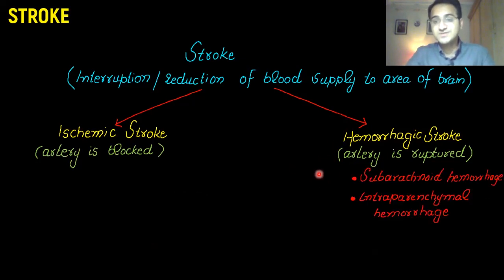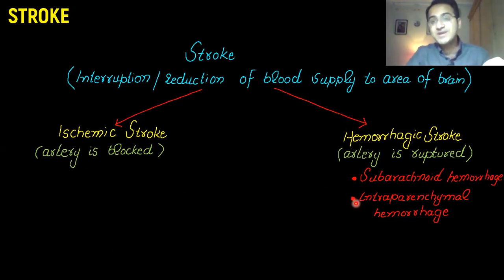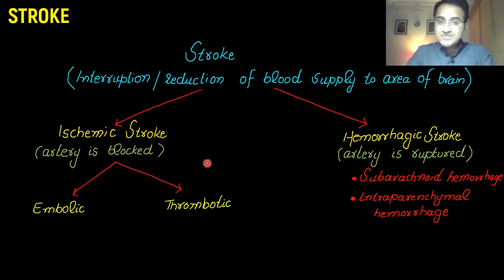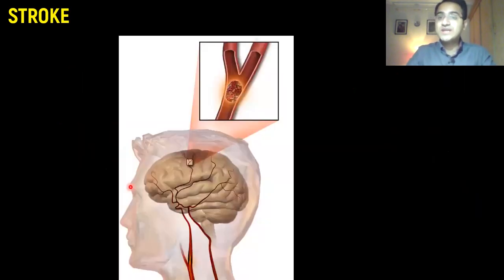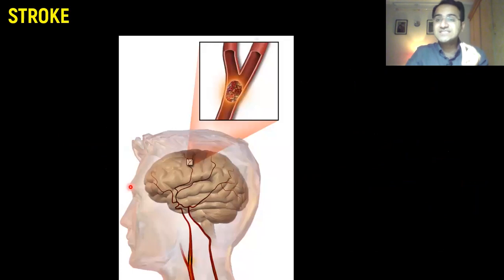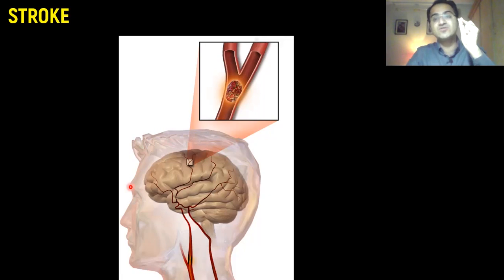Hemorrhagic stroke has various types: subarachnoid hemorrhage, when the bleed is around the brain, and intraparenchymal hemorrhage, when the bleed is within the brain. Ischemic stroke can be of two types: either embolic or thrombotic. Embolic strokes are those in which clots from anywhere in the body get stuck in the vessels supplying the brain, resulting in blockage and tissue death.